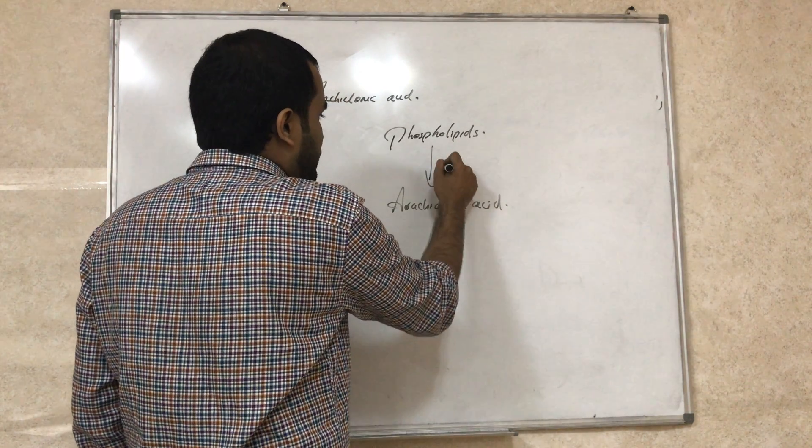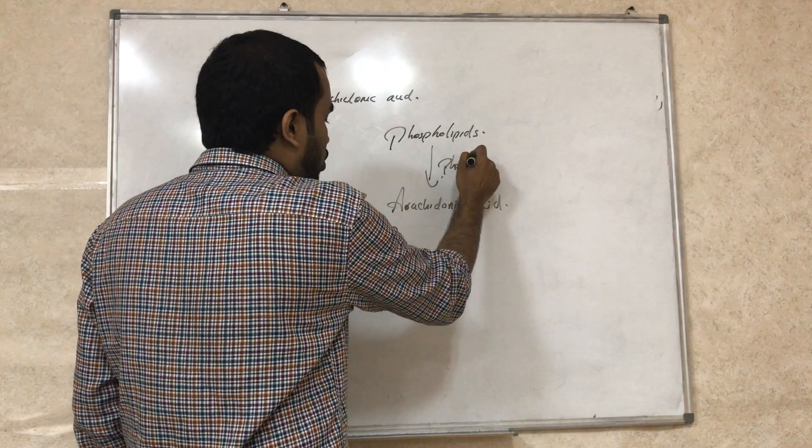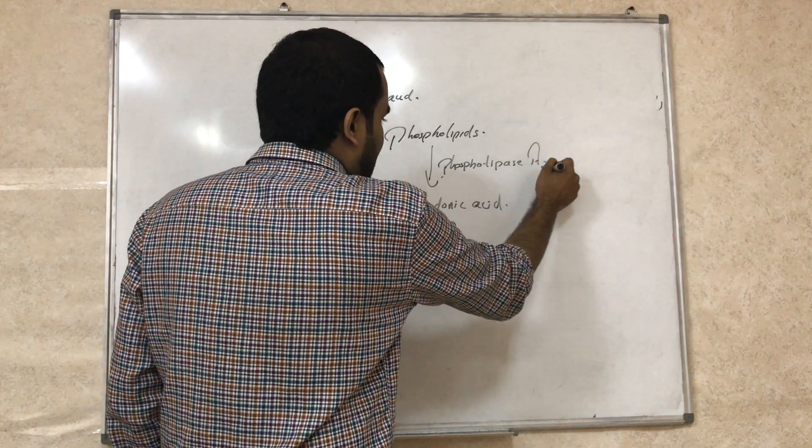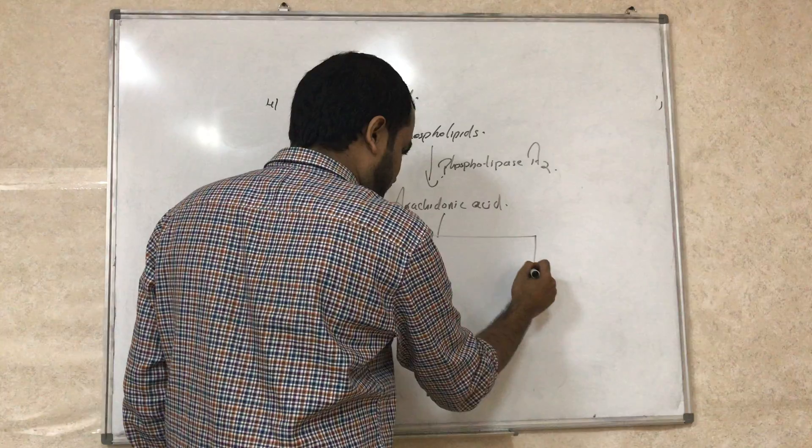Phospholipids will be converted to arachidonic acid by the help of an enzyme called phospholipase A2. Now this arachidonic acid can follow two pathways.